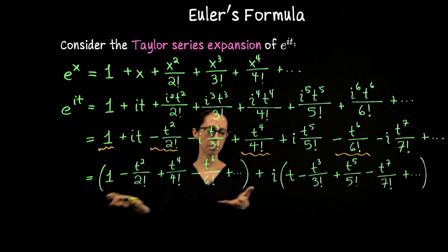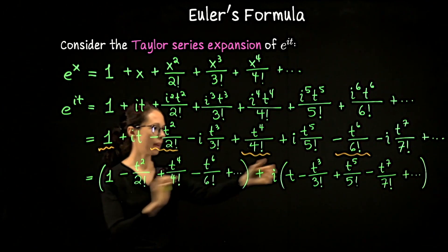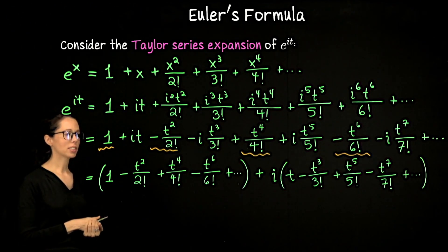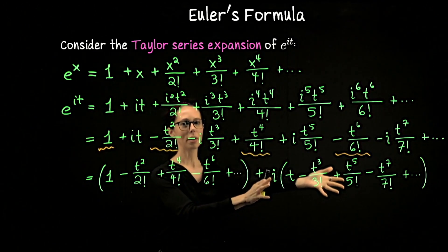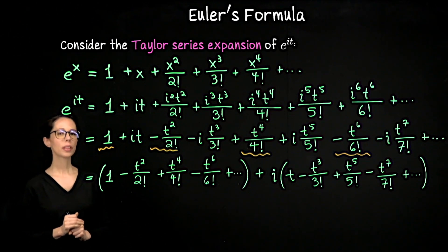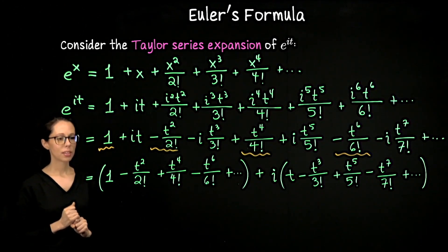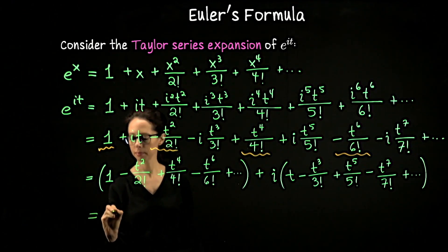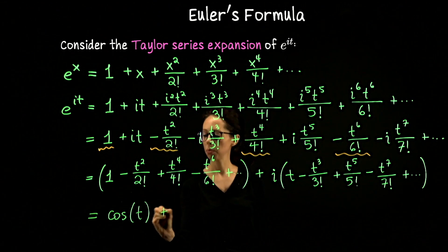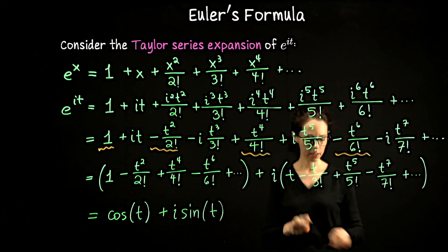Look at these two expansions and notice what they have in common — each one has its own pattern. We've seen the Taylor series for e to the x centered at x equals 0; these should remind you of something similar. Hopefully what it reminded you of was the Taylor series expansions for cosine and sine centered at t equals 0. The real expansion is cosine of t, and the imaginary expansion is sine of t. So the whole thing can be written as cosine of t plus i sine of t. This elegant condensed form is called Euler's formula.